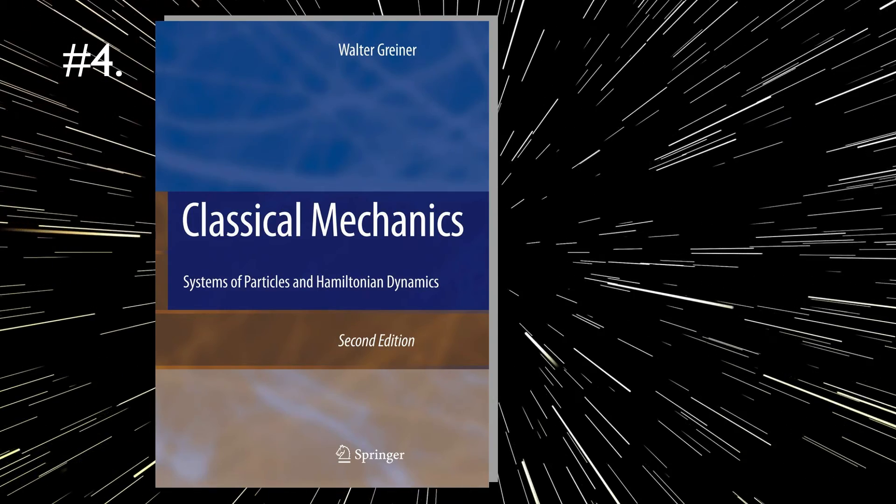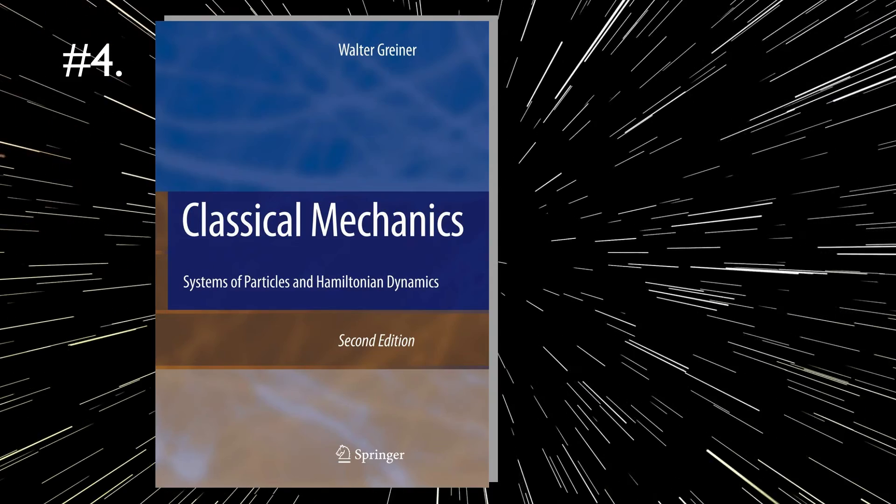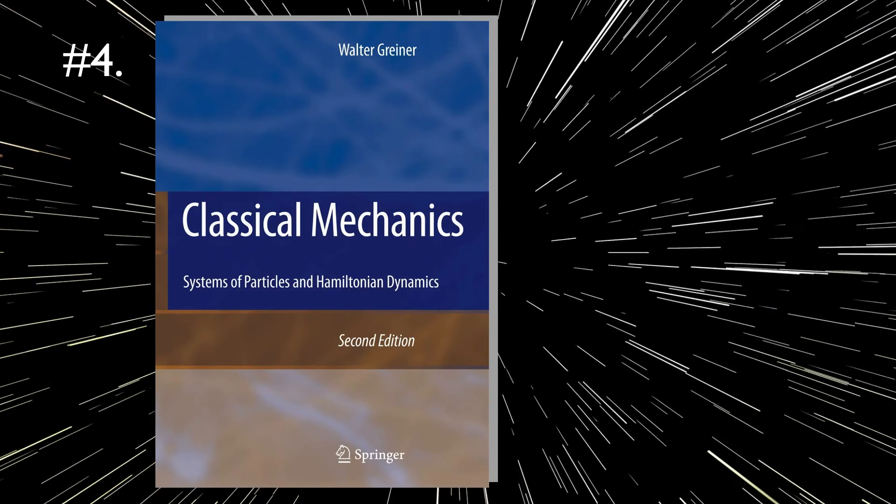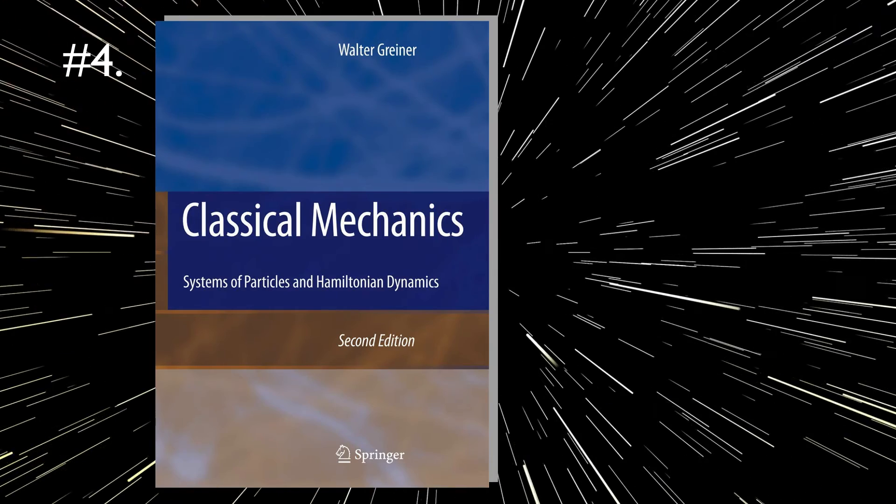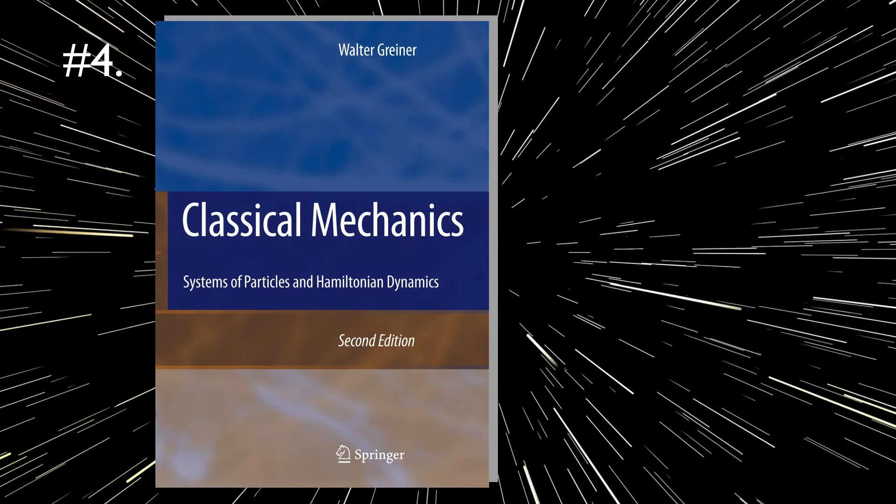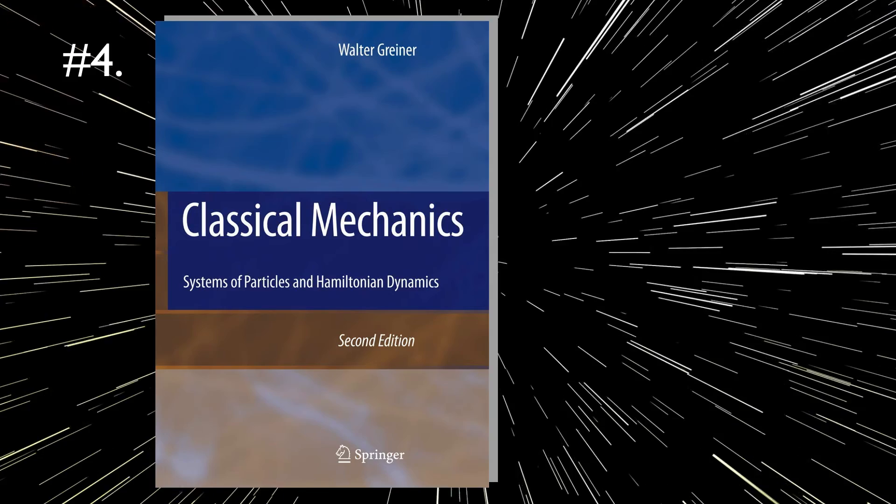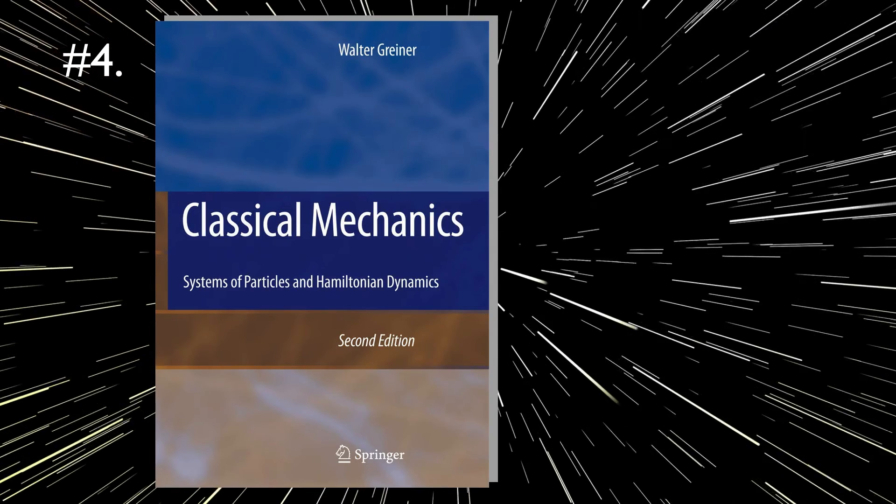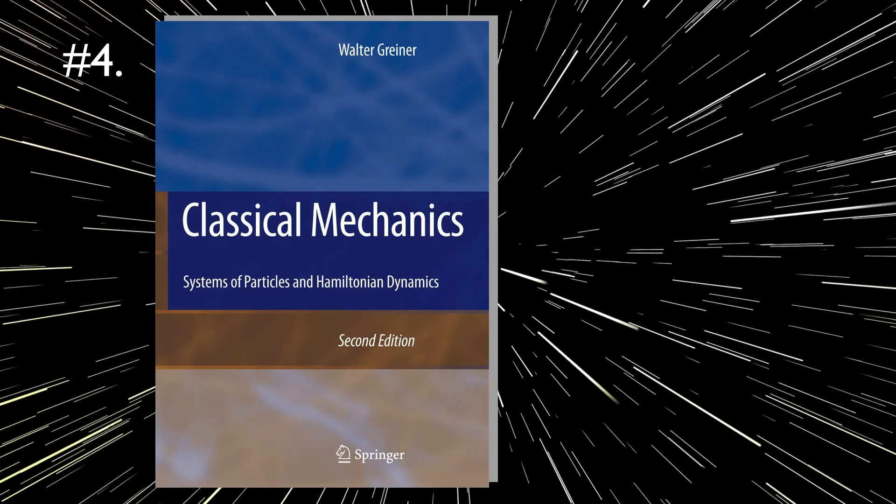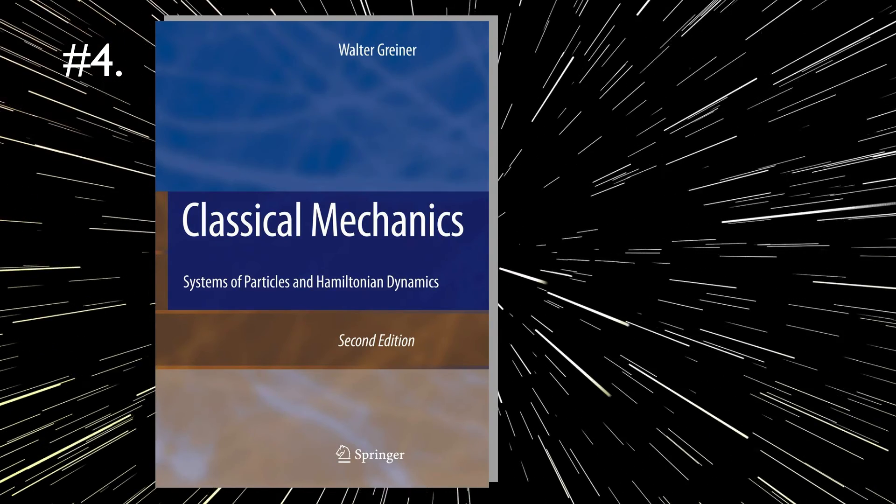At nearly 600 pages, this volume on classical mechanics is one of the heftier books on this list. It covers everything in Landau's book and beyond, with chapters on nonlinear dynamics and chaos theory. Yet, you could read it like a novel from cover to cover due to its straightforward approach and clear expositions. This is a book you could just read because the author practically fills in every intermediate steps in the calculations and thus makes it easy to follow.